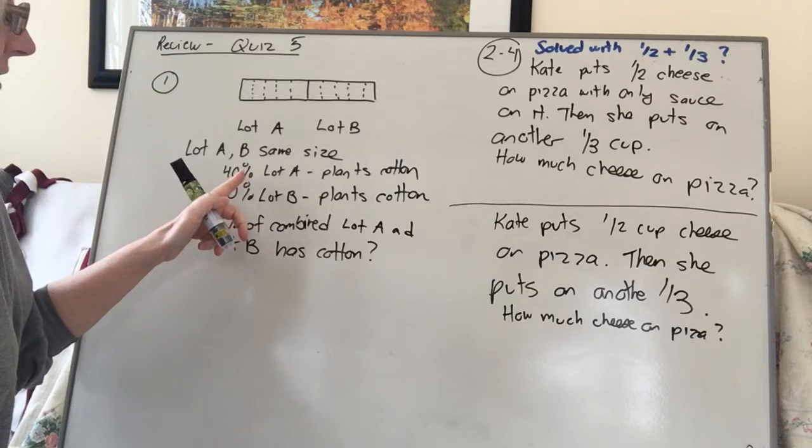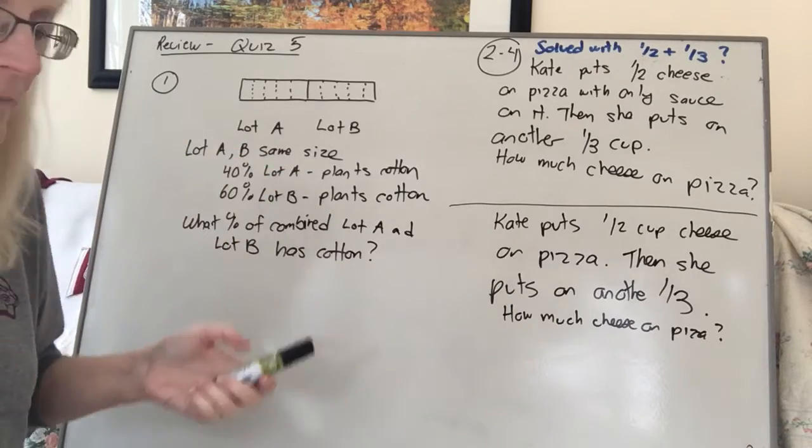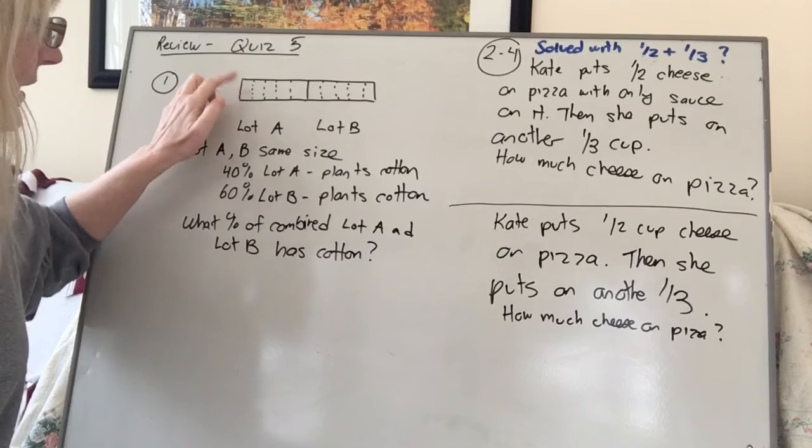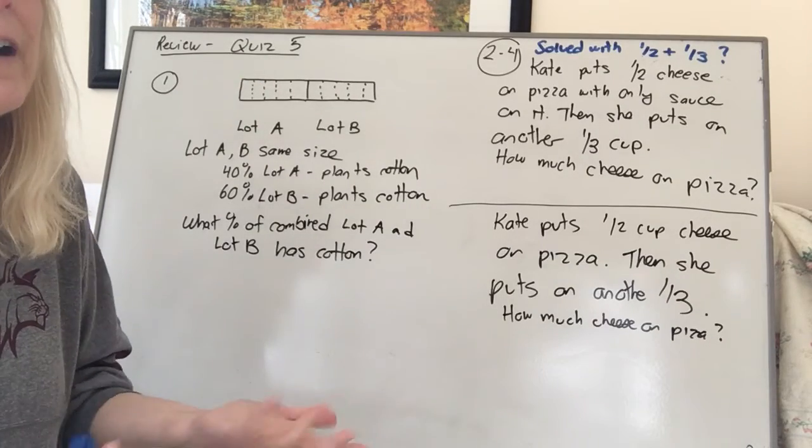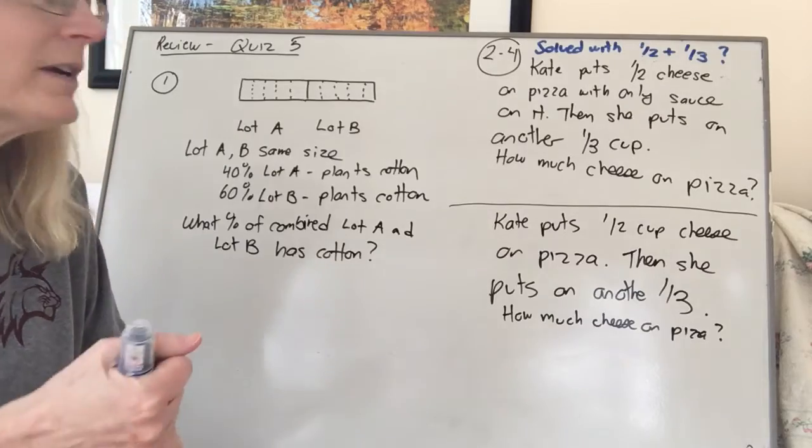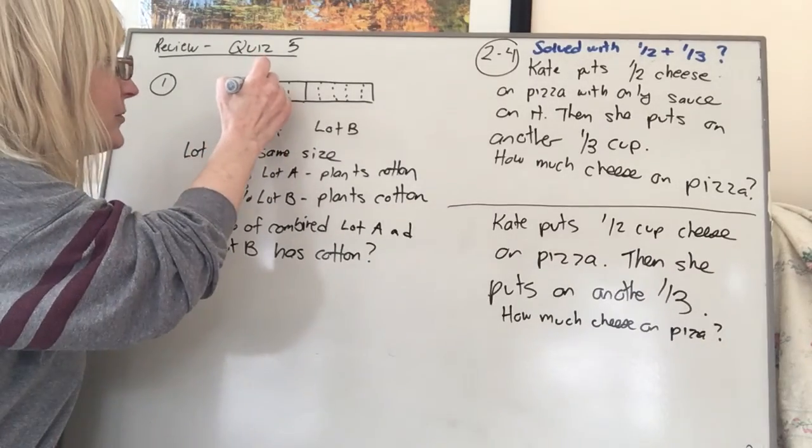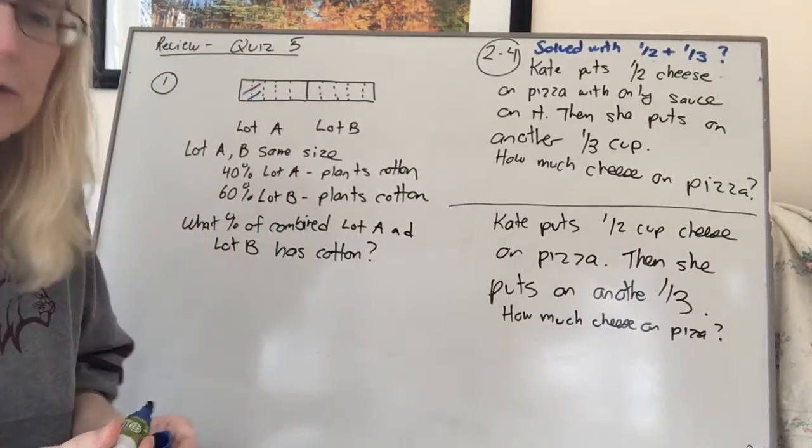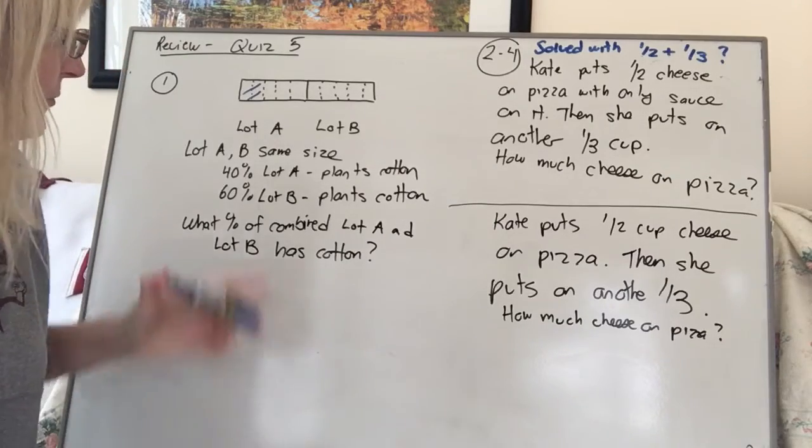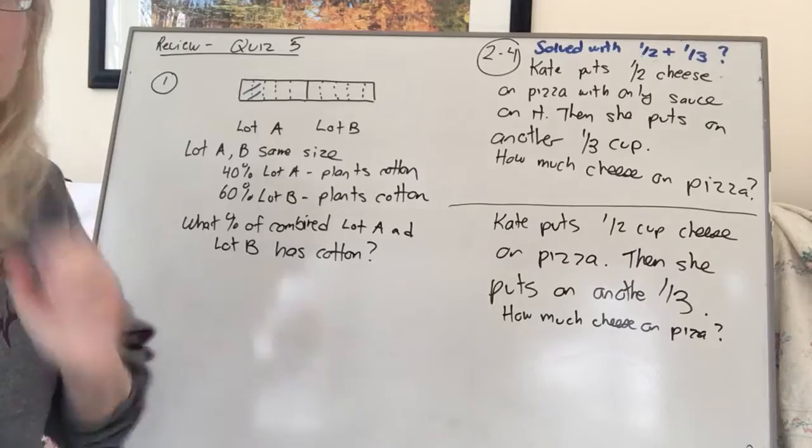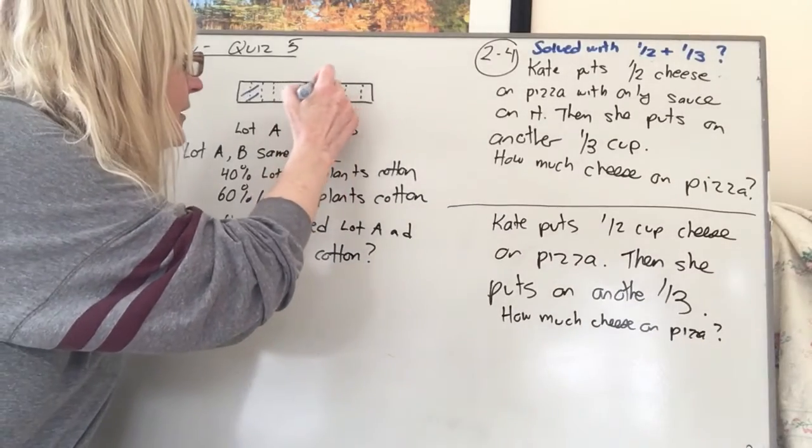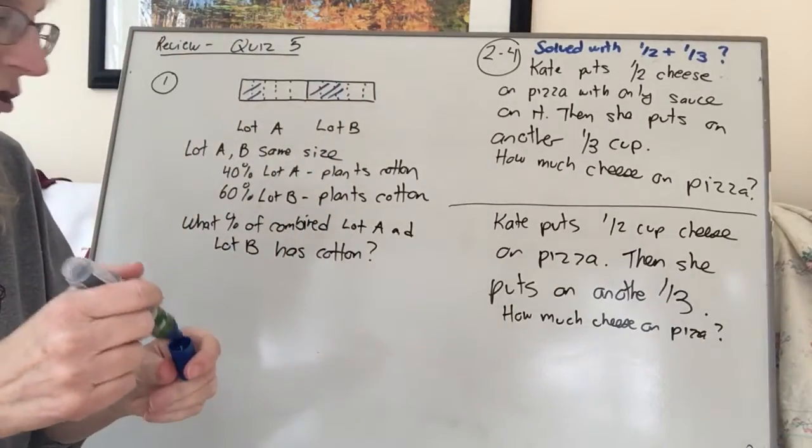It says on lot B, 40% of it has cotton planted on it. So I divided up each lot into five strips. If you divide it up into five strips, each little strip is 20%, right? So 40% would be two of those little strips. And then for lot B, it says 60% was cotton. So that would mean three of these strips would be shaded.